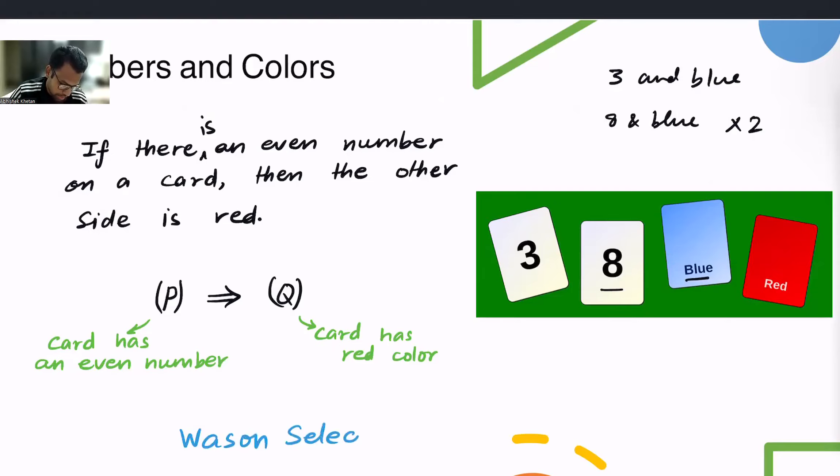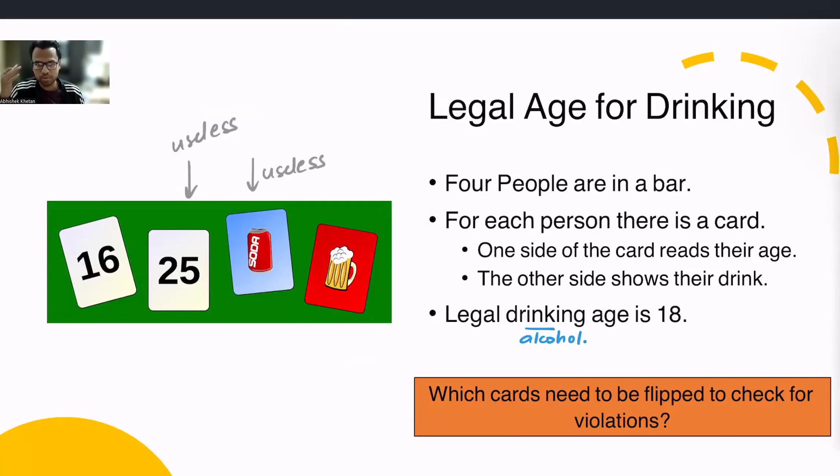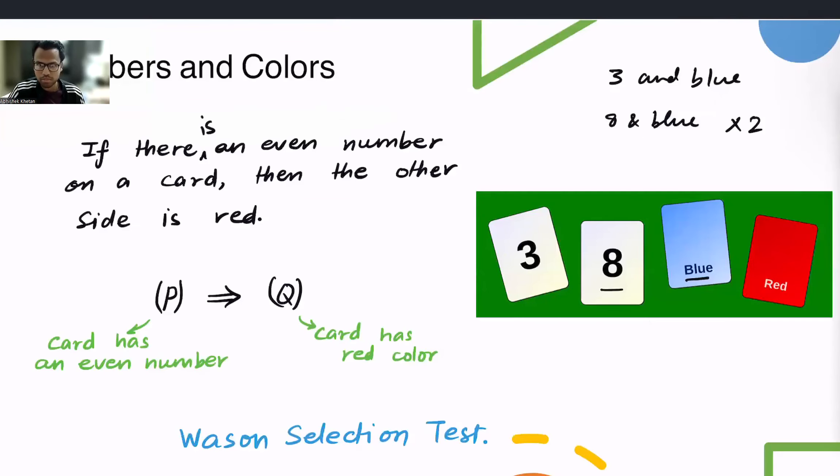So this is a very famous puzzle which is called Wason Selection Test. And it has been found that in the previous puzzle, this one, is far easier for people to solve. People give correct answers. But somehow this one poses a lot of problems for us, even though they are exactly the same. And this tells us something about ourselves. That even though it doesn't really say anything about our intelligence, because you can solve the equivalent puzzle very easily, while most people struggle with this, it says something about how our brains are wired. And that we can overcome that conditioning of ours or we can fool our mind.